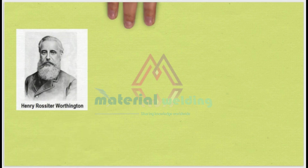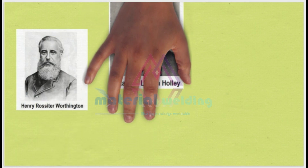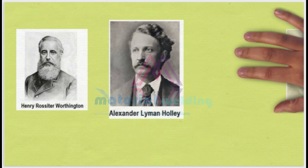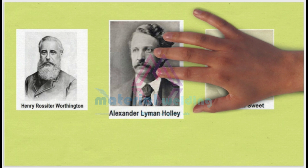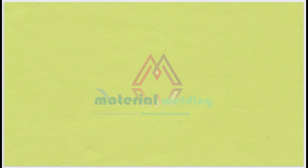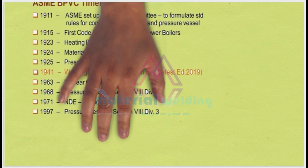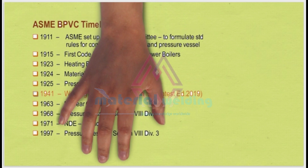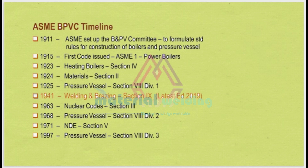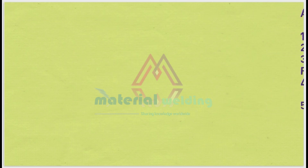ASME was founded by Mr. Henry, Mr. Alexander, and Mr. John Edson Sweet. The table here shows the timeline of ASME. As we can see, the topic of our today's discussion — ASME Section 9 — was first introduced in 1941.